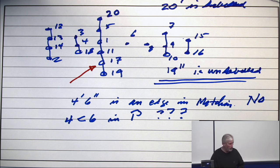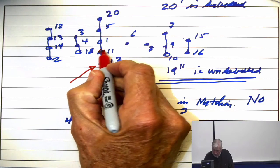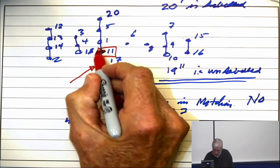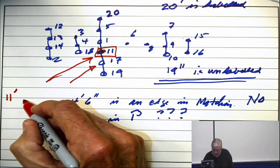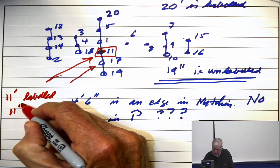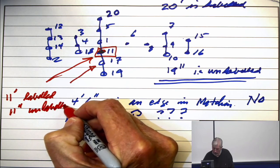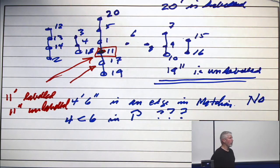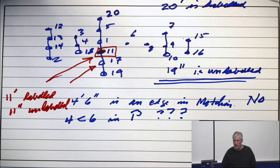somewhere in that list you have to find a point, I don't know where it is, where 11 prime is labeled and 11 double prime is unlabeled. The point is there is such a point in that chain. And you get it in a trivial way.